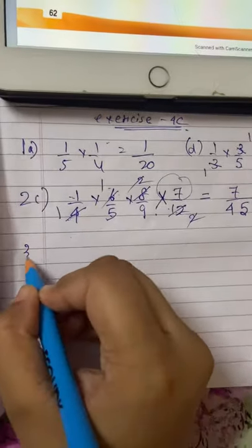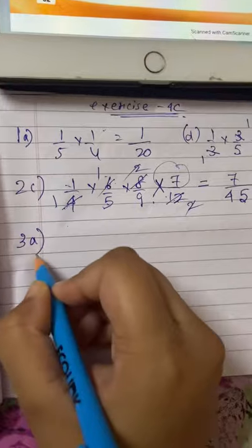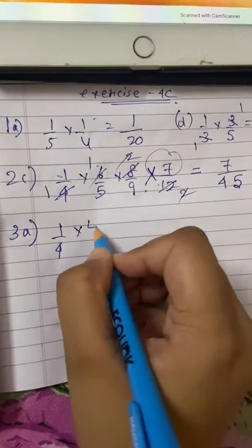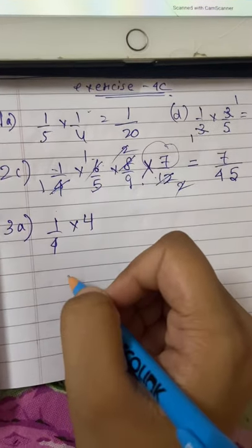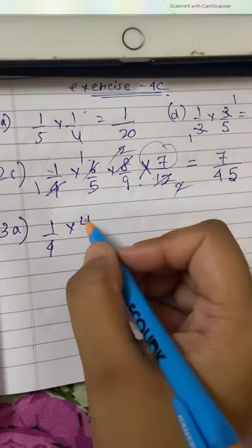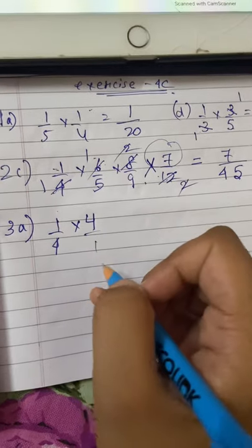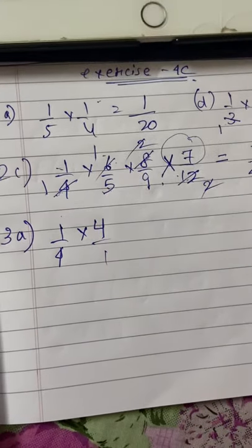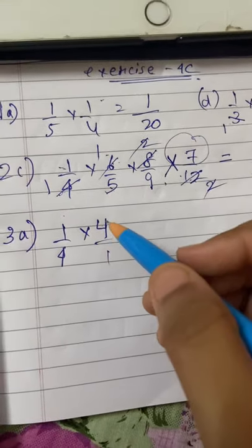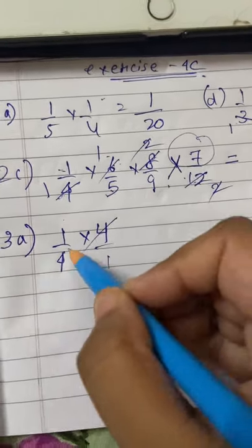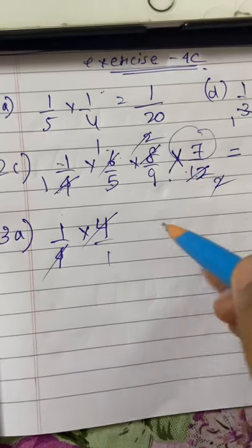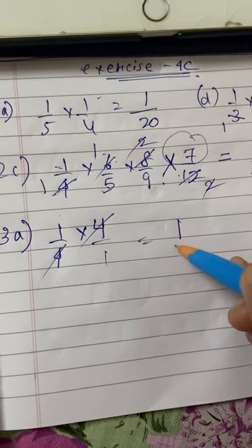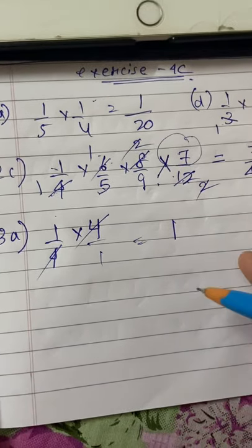3rd question, sub-question A: 1/4 into 4. Since 4 is a whole number, imagine its denominator is 1. Now I can cancel 4 and 4, so the answer is just 1. You don't have to write 1/1.